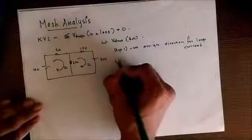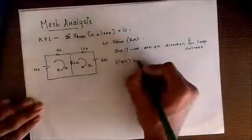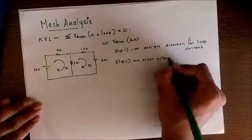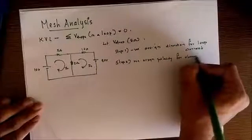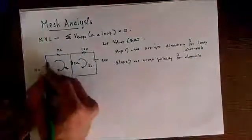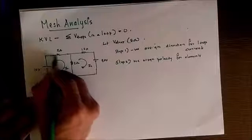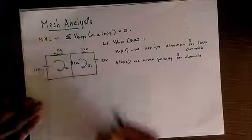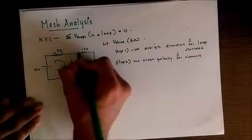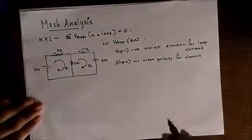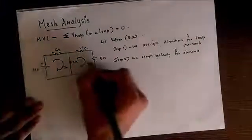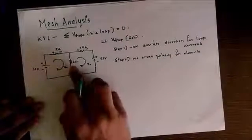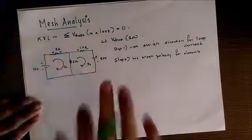Now step two: based on this direction of current, we assign polarity for elements. In this case, for the resistor, the current is entering like this and leaving like this, so we put a positive sign at the entering side and negative sign at the leaving side, like this for 10 ohm. And for batteries, we know that this is positive and this is negative, so we assign that also. In the case of this 2 ohm resistor which is common to both loops, we just let it be like that. We'll understand when we write the equation.